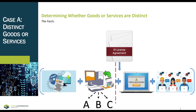The company sells each of these goods and services separately. Analyzing the installation service, we noted it includes changing the web screen for each type of user — for example, a sales team, marketing team, or IT team. The company notes that the installation service is routinely performed by other entities and does not significantly modify the software. The software also remains functional without the updates and technical support. In this case, the company delivers the software first, and it remains functional without the updates and technical support.